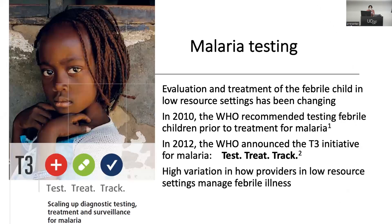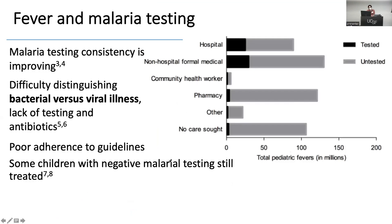Starting with malaria testing: since 2010 the WHO has recommended testing all febrile children before treating them for malaria. We used to just treat everybody, but since this recommendation came out it's turned to 'test, treat, track' — test first, treat if positive, and track who we're treating. There's still decent variation in how providers are doing this, and outside of malaria, how they're managing febrile illness.